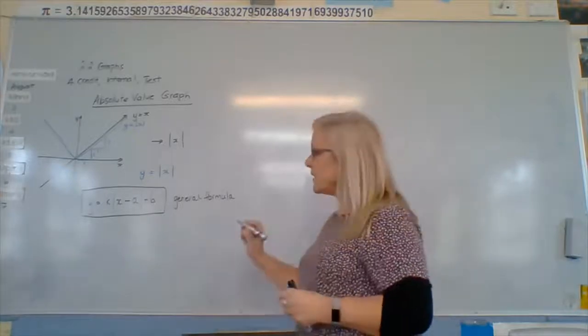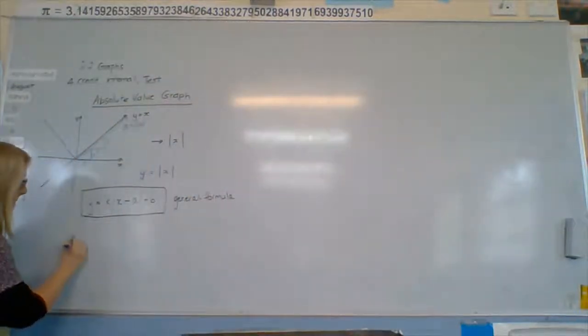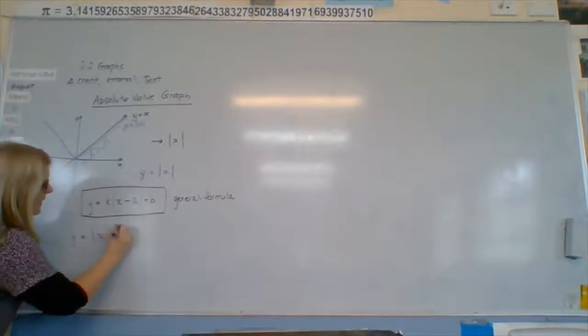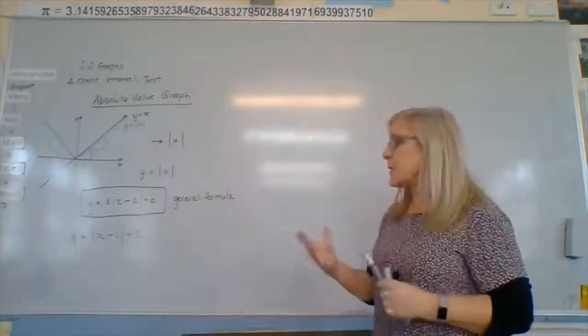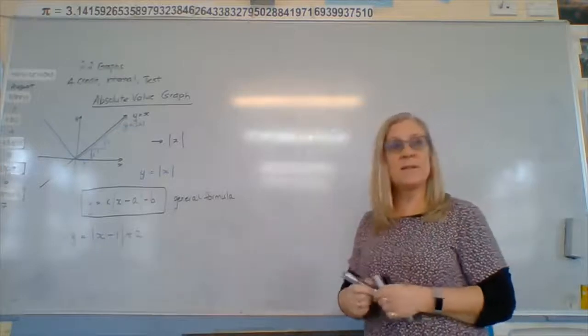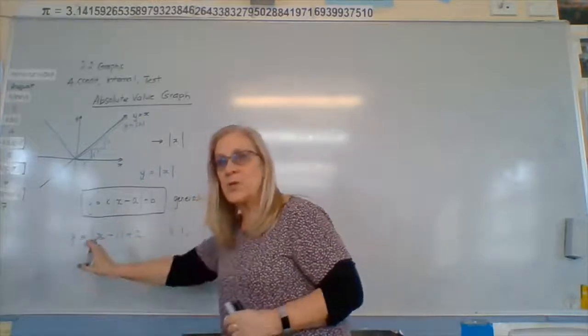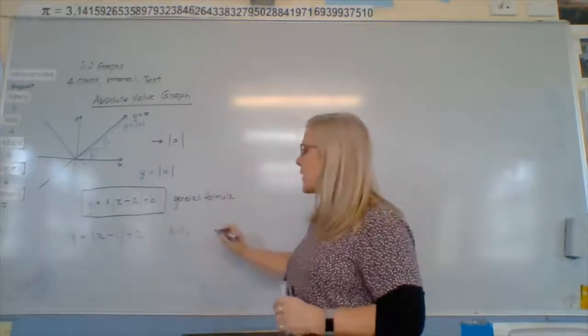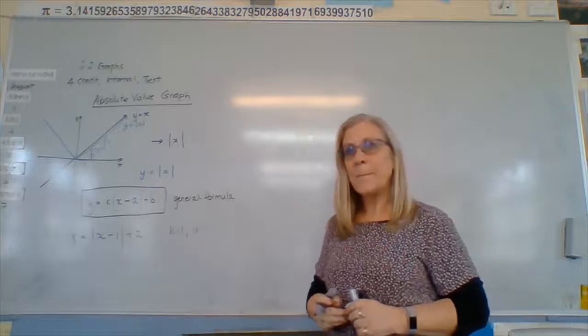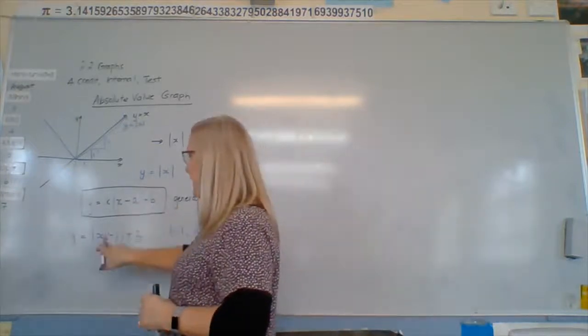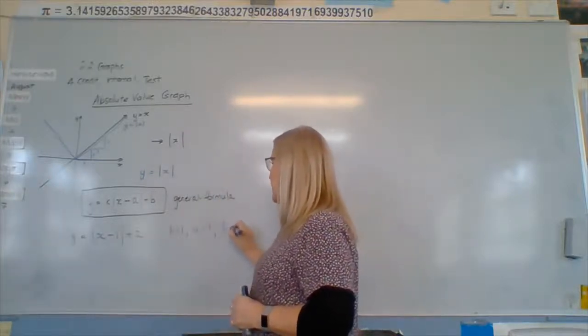So if we start with one that says y equals x minus 1 plus 2. The first thing we do is we write down what the values of k, a and b are. So k is? No. Good. If it was zero, all of that would vanish, wouldn't it? Zero times? Gone. What is a? So it's negative one here. So actually the a is just one. And b? Two. Plus two.